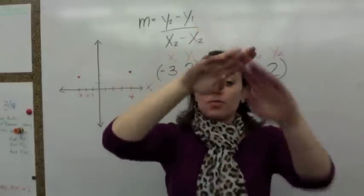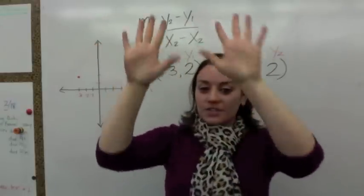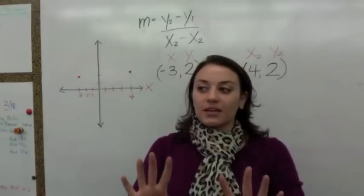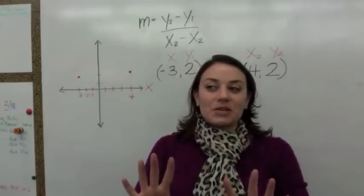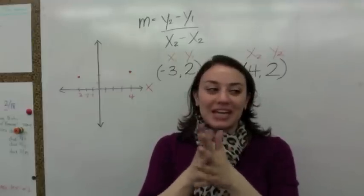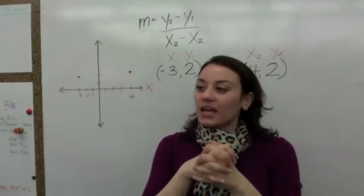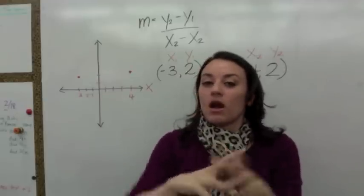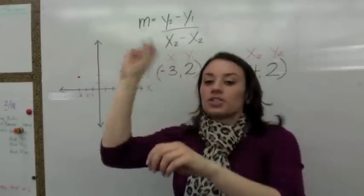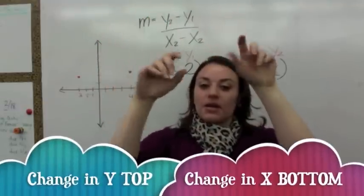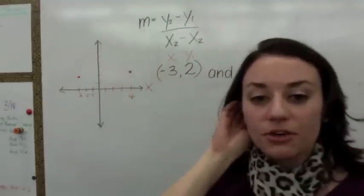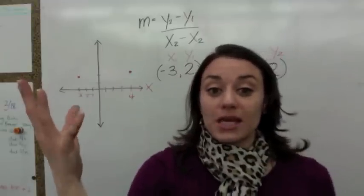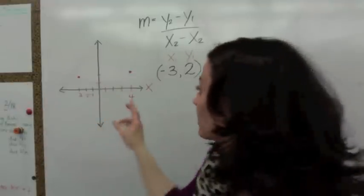It goes: slope, slope — change in y, top; change in x, bottom. Stand up, people — let's get moving. Slope, slope — change in y, top; change in x, bottom. So the change means that you're going to subtract the y-coordinates and divide it by subtracting the x-coordinates.